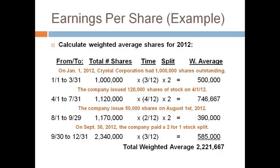All stock splits and stock dividends must be retroactive to the beginning of the year. You must multiply all prior lines by 2 to be consistent. Write the number of months the shares were outstanding divided by 12 on each line and then do the math. Add up the weighted average shares for each period to get the total weighted average of 2,221,667. Do a quick reasonableness check — the average should be between the highest of 2,340,000 and the lowest of 2,000,000.